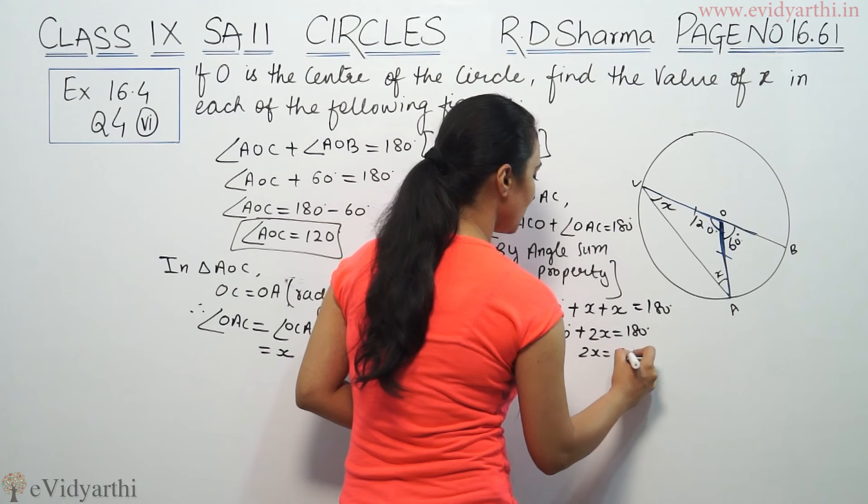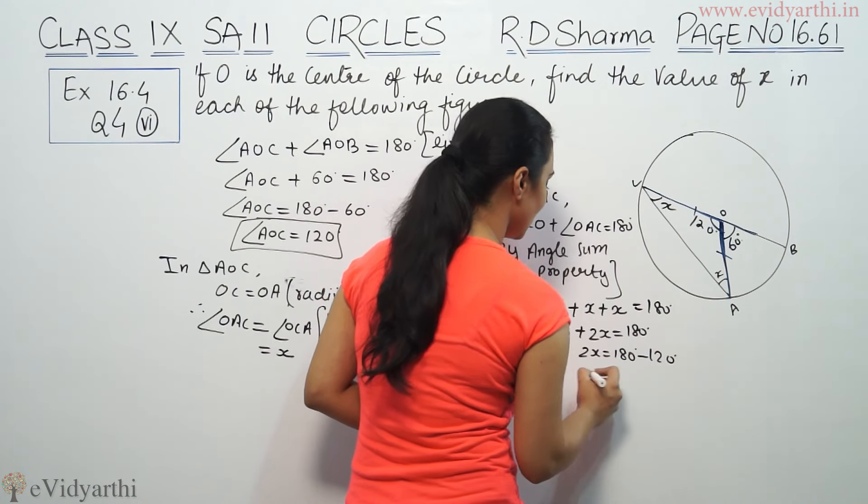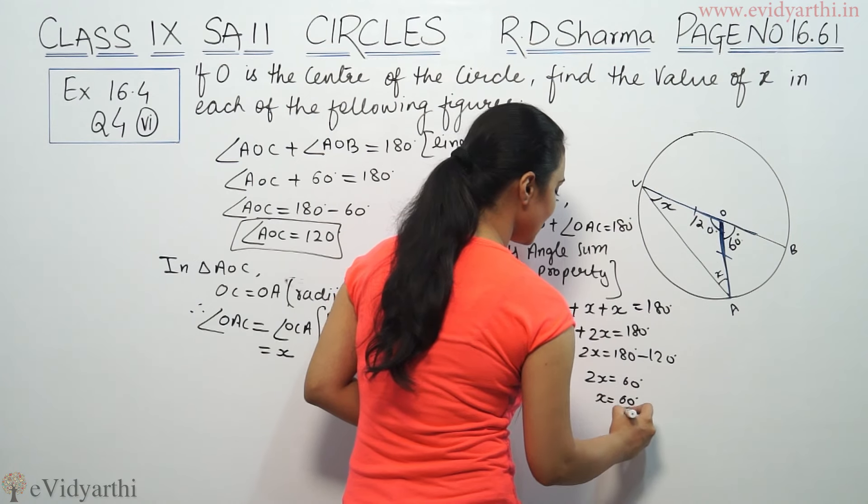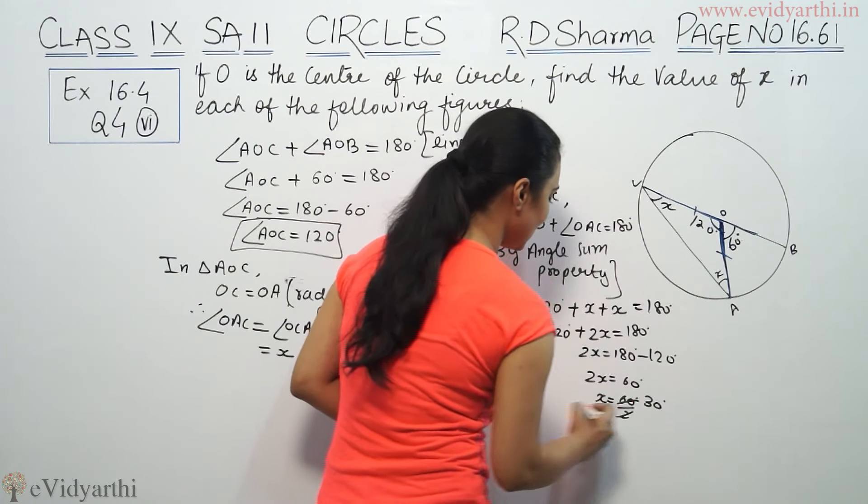So 2X is equal to 180 minus 120. Therefore 2X is equal to 60. X is equal to 60 by 2, that means 30 degree.